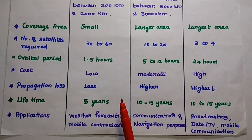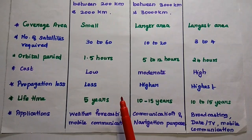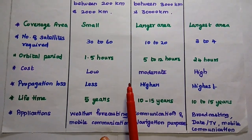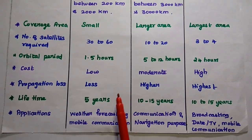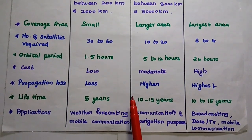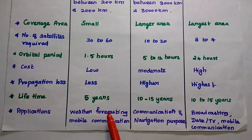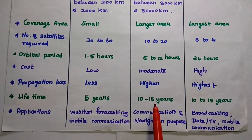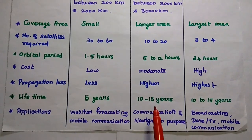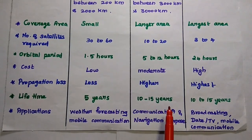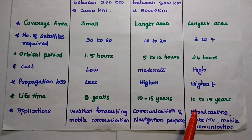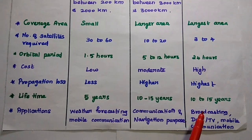The lifetime of LEO satellites is around 5 years, which is a very short duration. For MEO, it is 10 to 15 years. For GEO, it is also around 10 to 15 years.